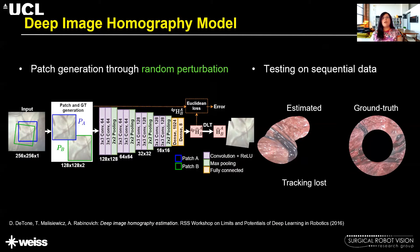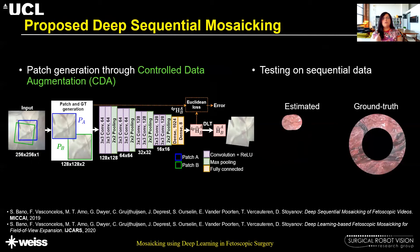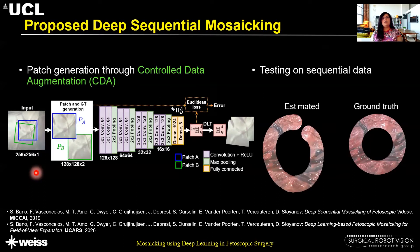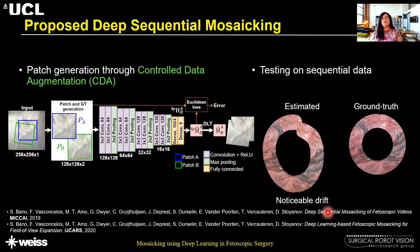To overcome this problem, we propose controlled data augmentation — instead of random perturbation, we only introduce rotation and translation during training. This significantly improved results, but there was still noticeable drift. The reason for this drift is that the model is trained on still images while being tested on sequential data, which contains errors due to amniotic fluid particles floating around, varying light sources, and lack of texture.